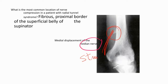The median nerve will be here at that level. The Arcade of Struthers is a different structure — it affects the ulnar nerve, not the median nerve.